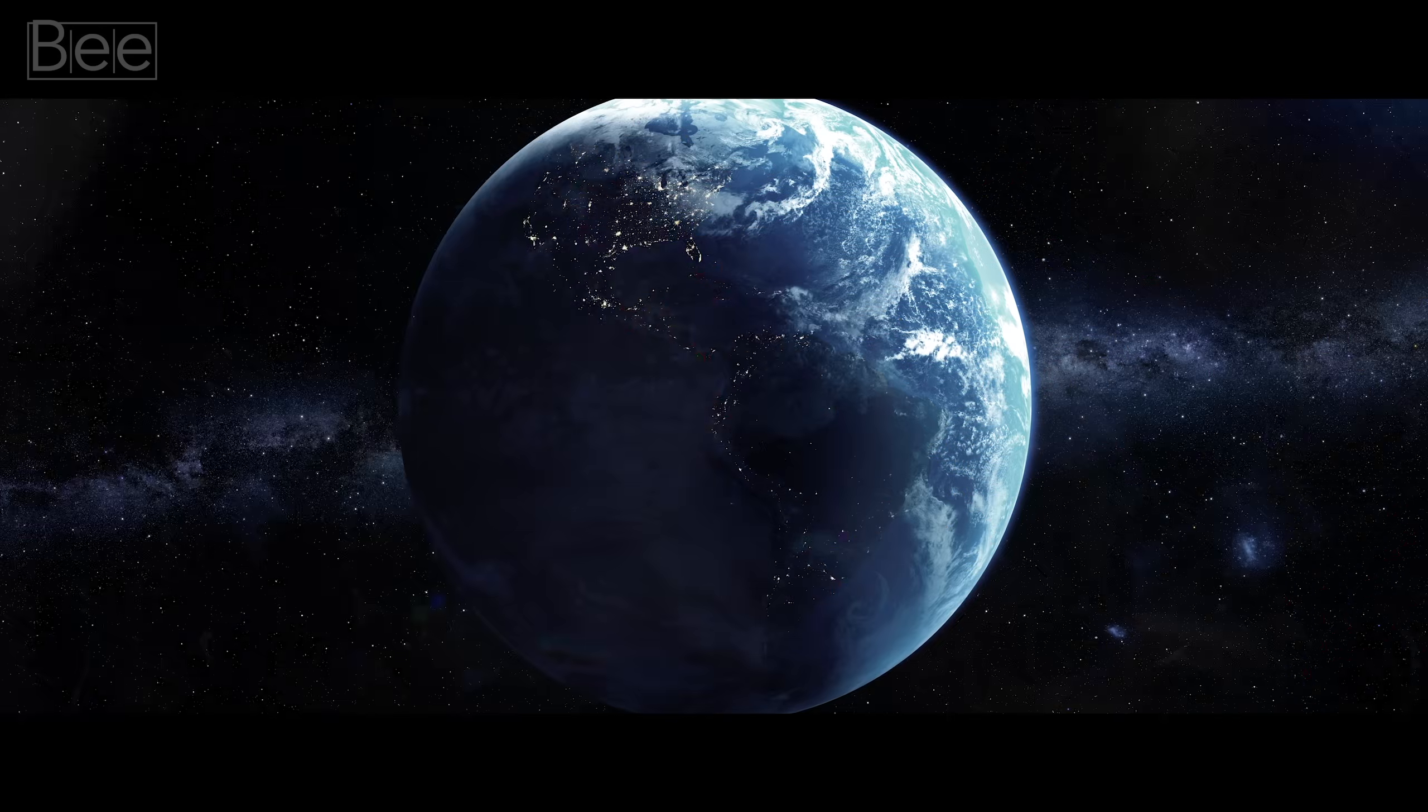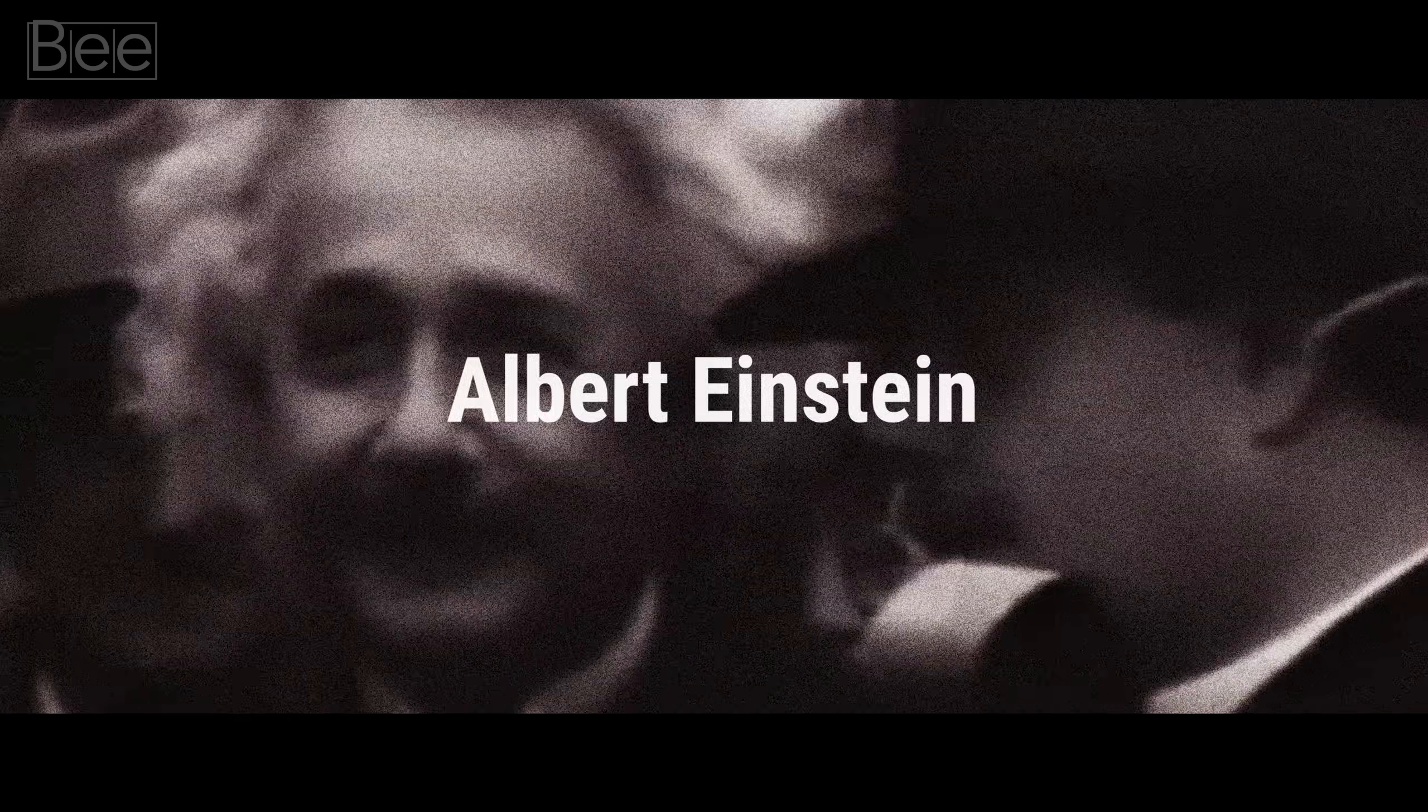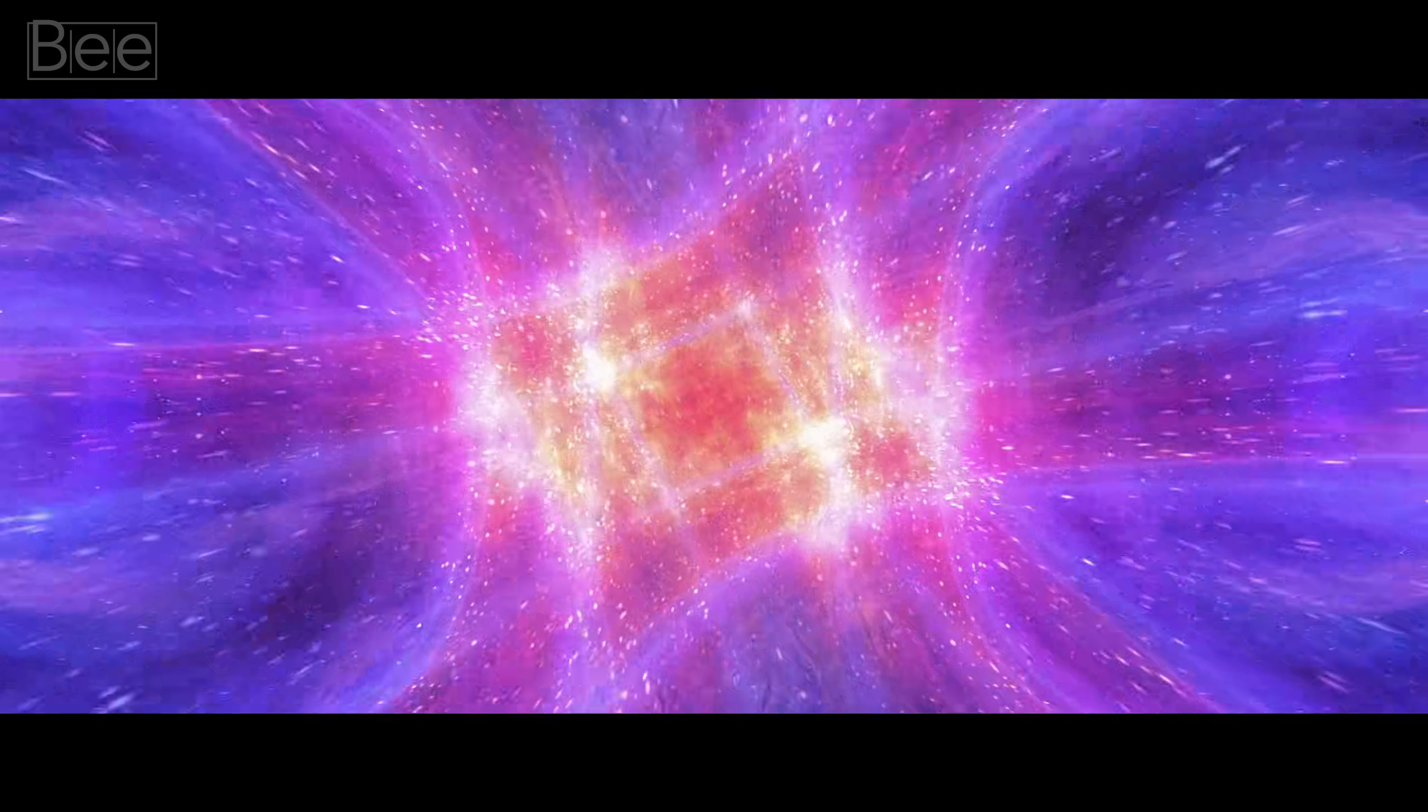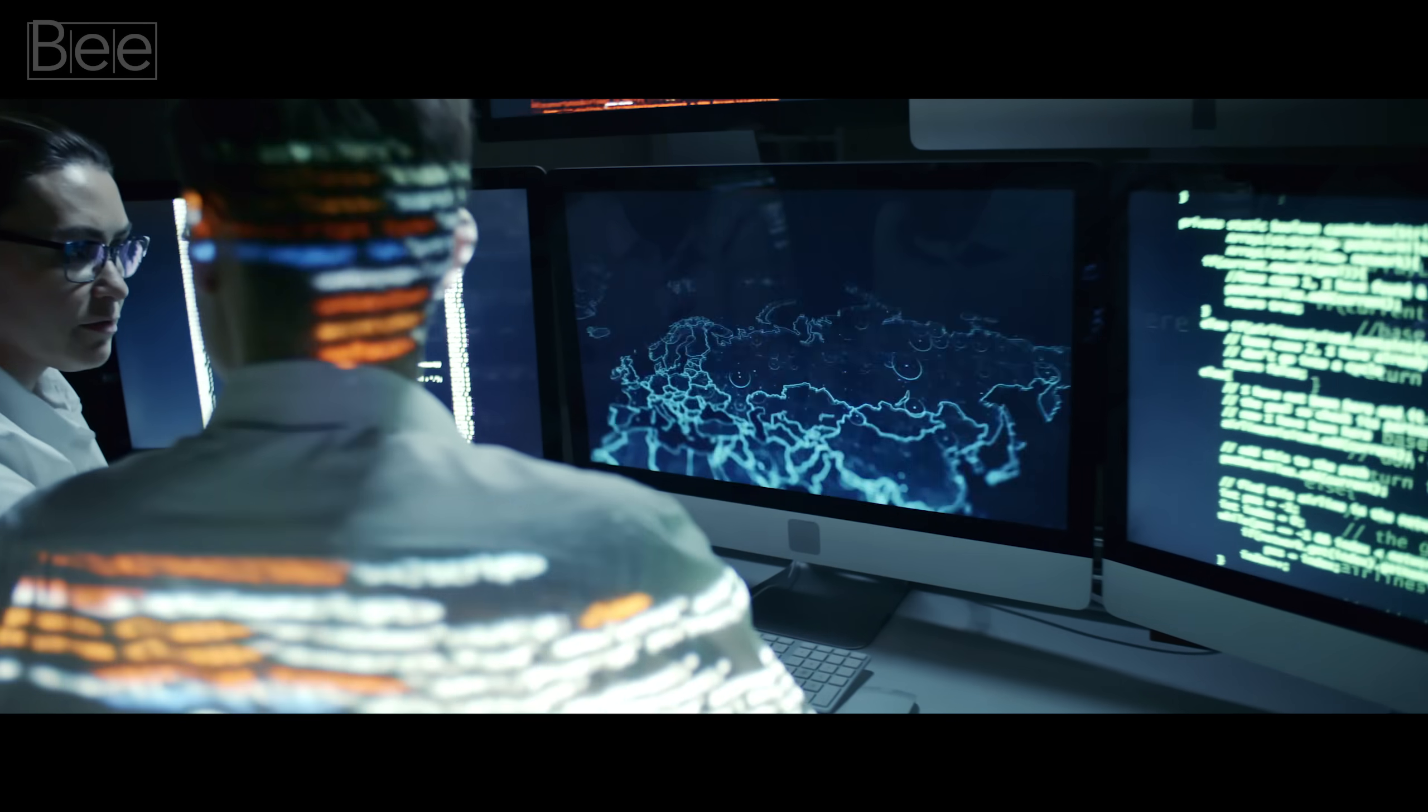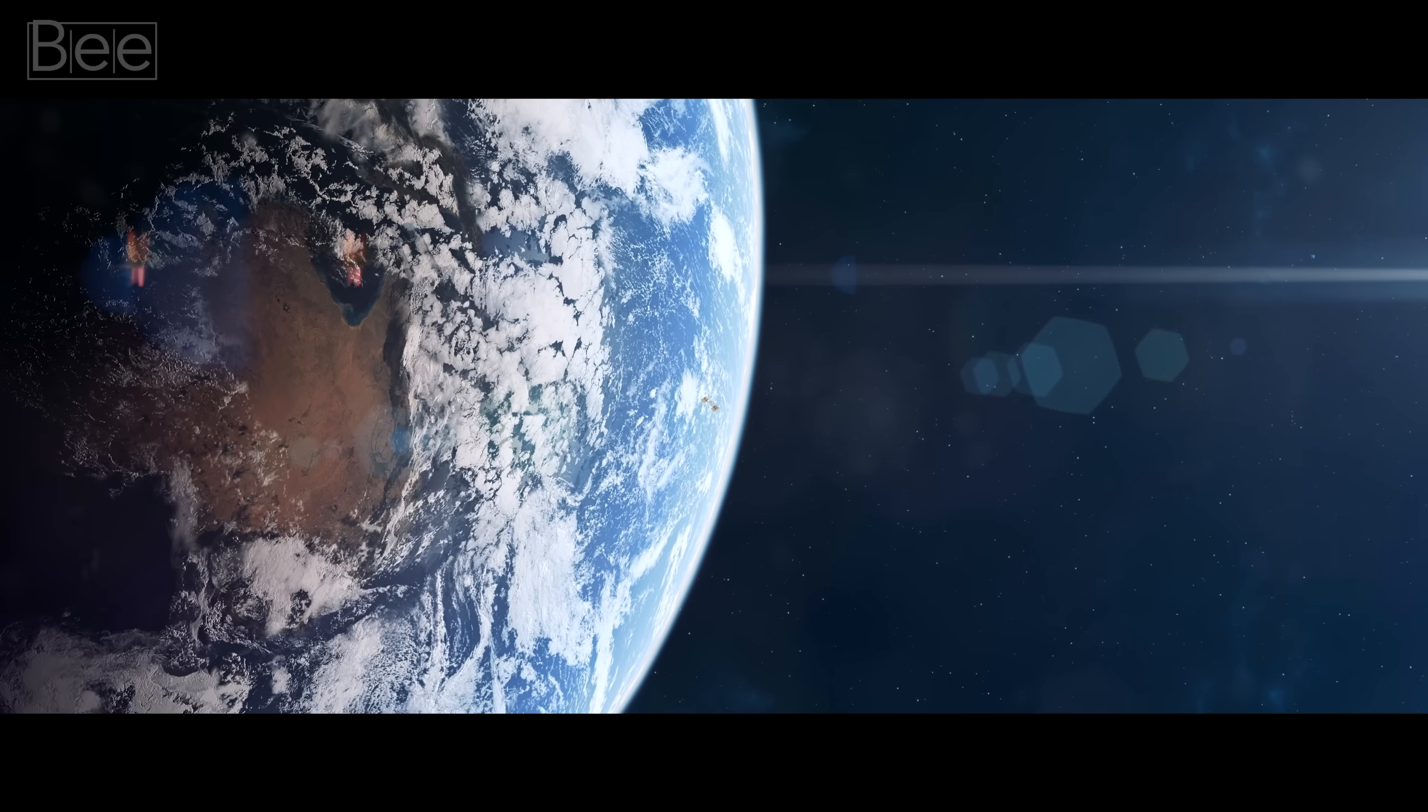In 1895, a 16-year-old boy imagined himself chasing a beam of light. This thought eventually changed the world forever. The boy's name was Albert Einstein. So what really was that thought? And how could one thought change the world so thoroughly?